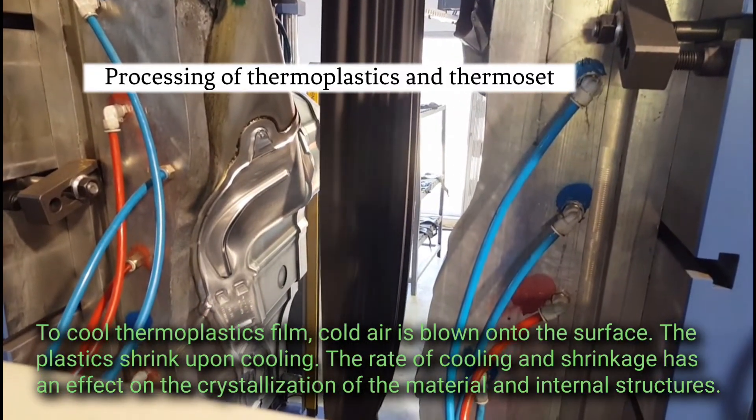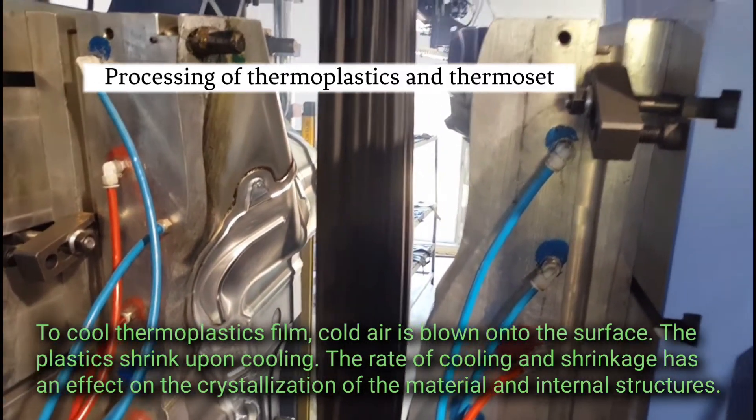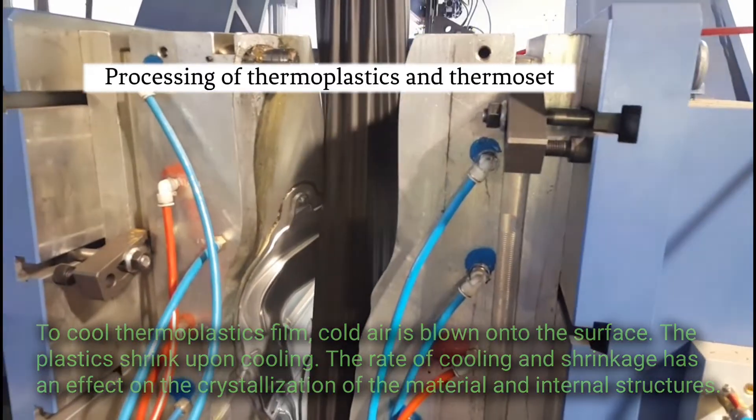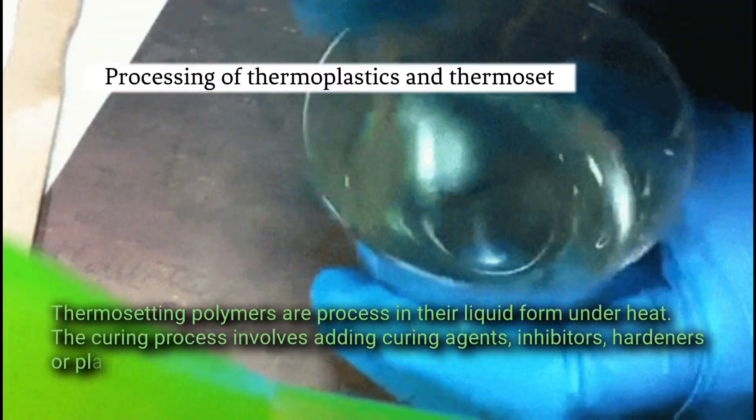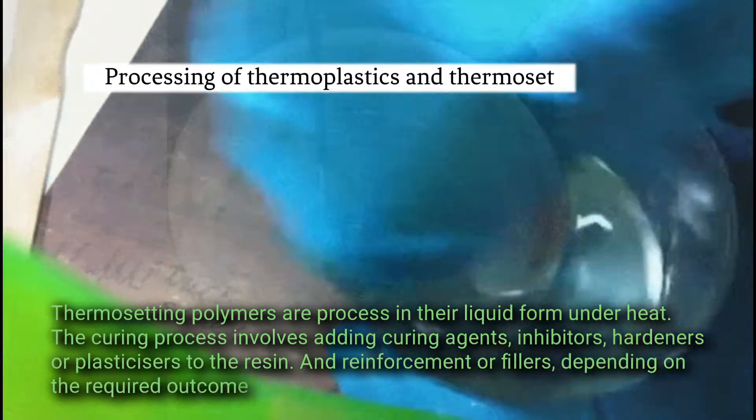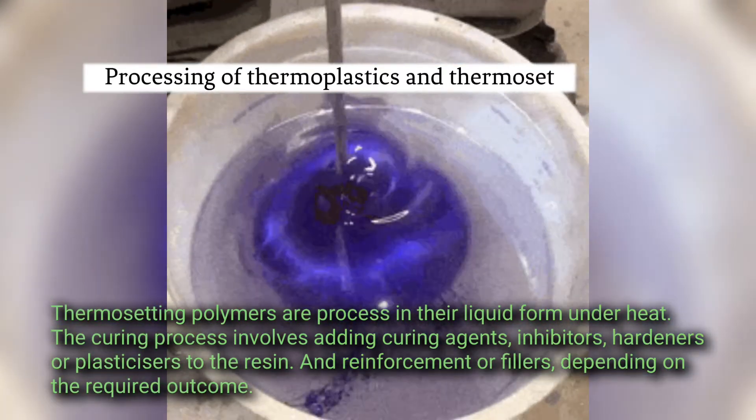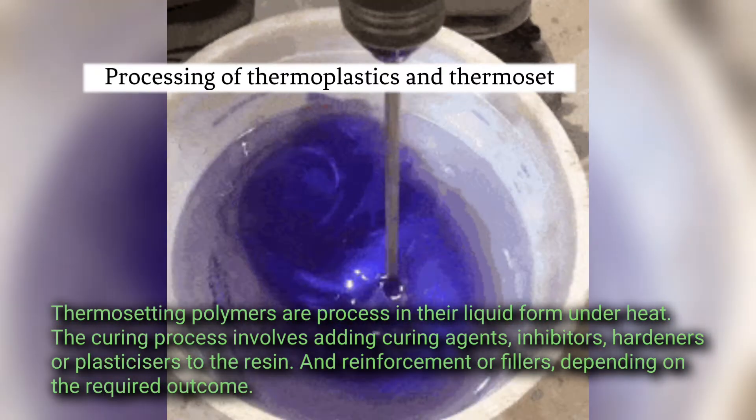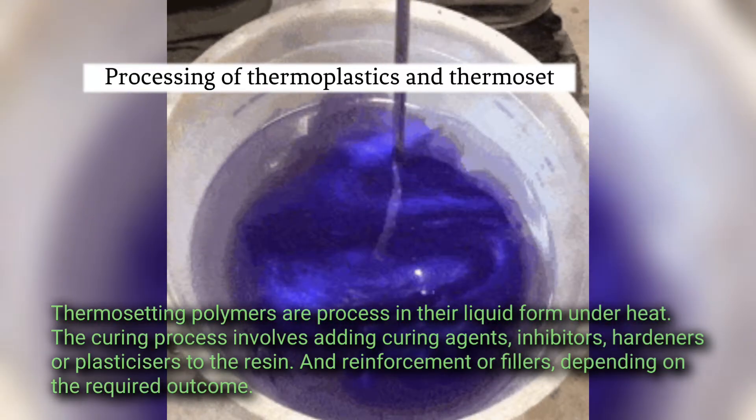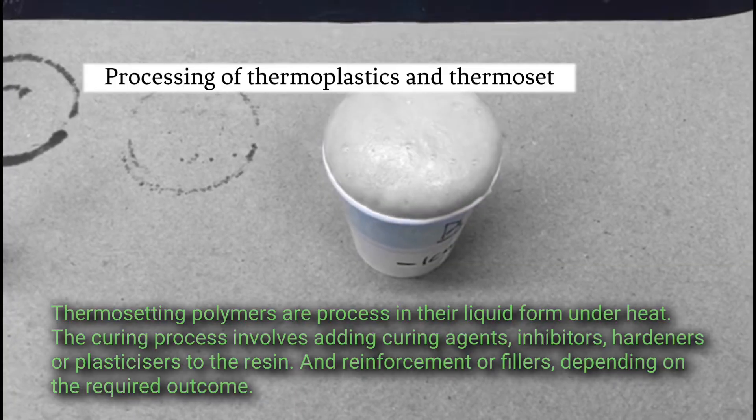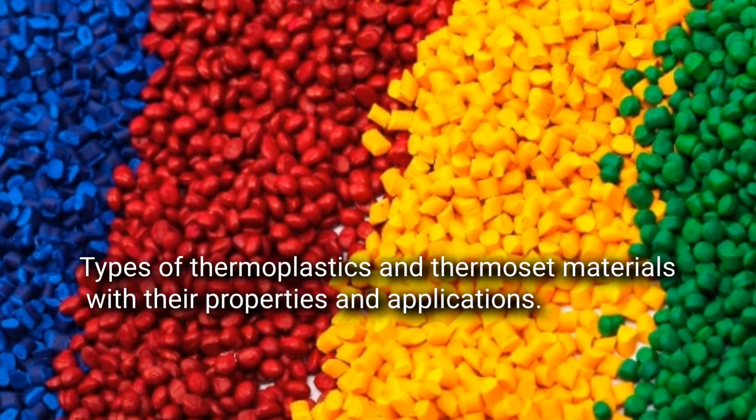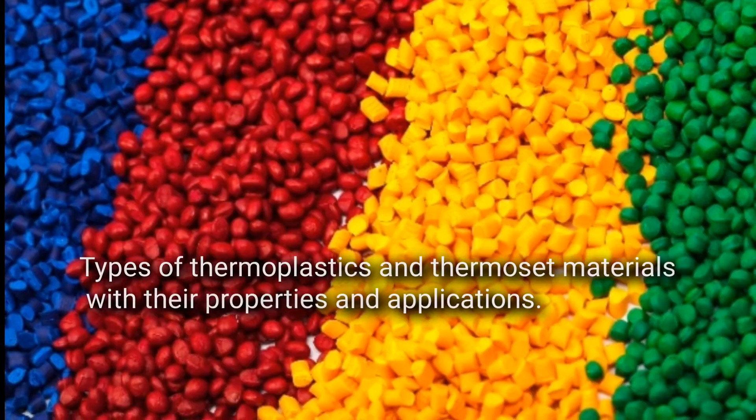Thermosetting polymers are processed in their liquid form under heat. The curing process involves adding curing agents, inhibitors, hardeners, or plasticizers to the resin and reinforcement or fillers depending on the required outcome. Types of thermoplastic and thermoset materials with their properties and applications: Examples of thermoplastic materials include polyamide nylon - tough and relatively hard material used for power tool casings, curtain rails, bearings, gear components, etc.